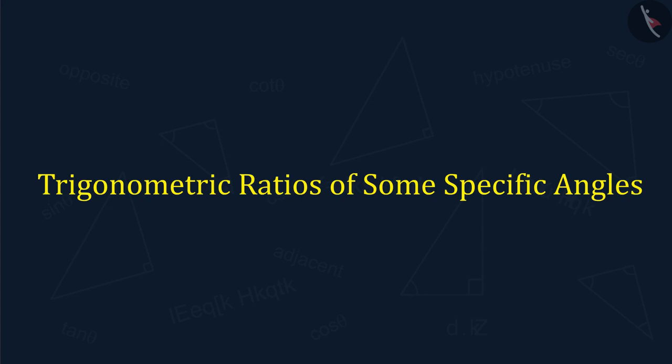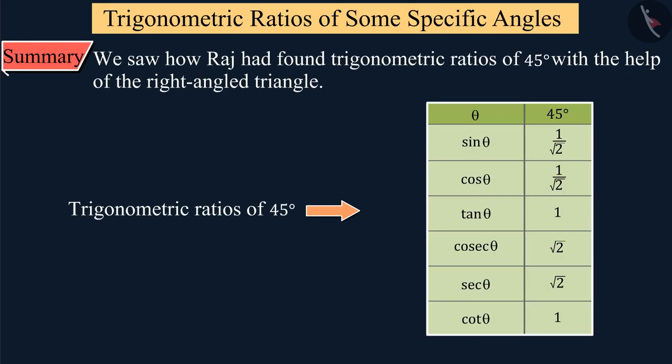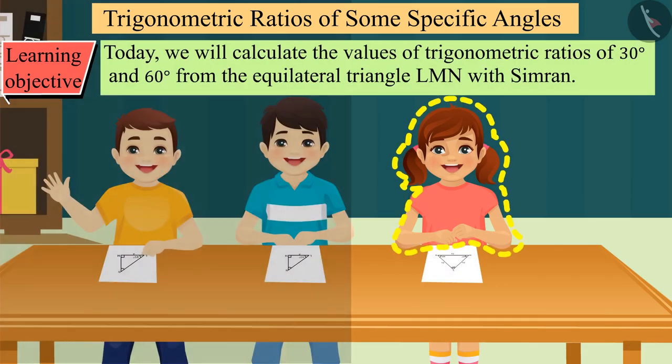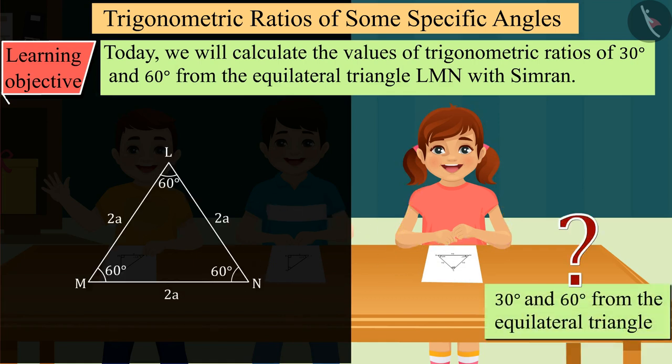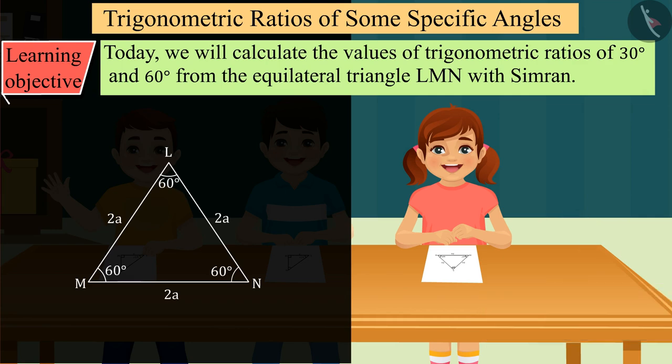Welcome to this video. In our previous video, we saw how Raj had found trigonometric ratios of 45 degree angles with the help of the right angled triangle. Today, we will calculate the values of trigonometric ratios of 30 degrees and 60 degrees from the equilateral triangle LMN with Simran.